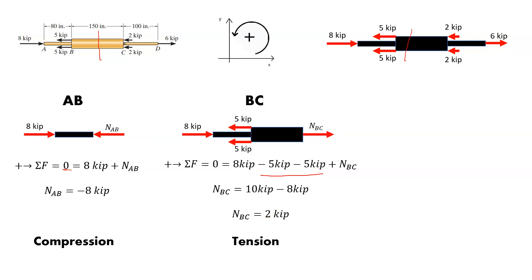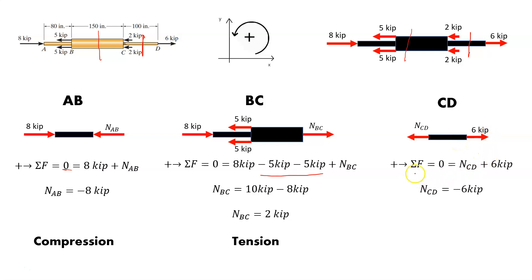For the last segment CD, instead of going left to right I'll take the simpler approach and go right to left. We've got an internal load equal and opposite to the applied load. Sum of forces equals zero, and the normal load NCD equals negative 6 kip. That's negative, but you also notice it is pulling in the opposite direction, so this segment is still in tension.